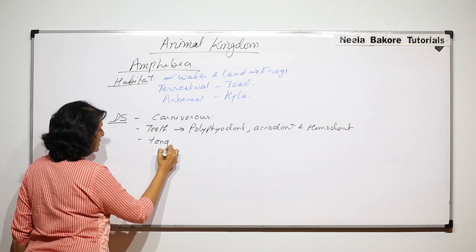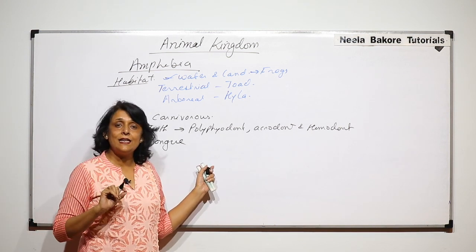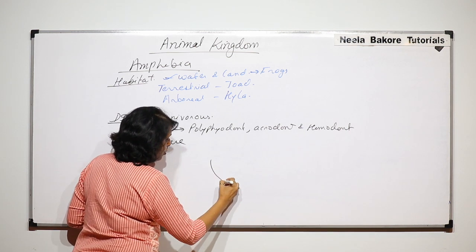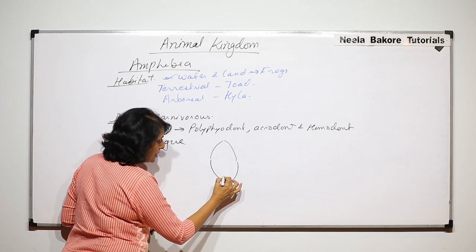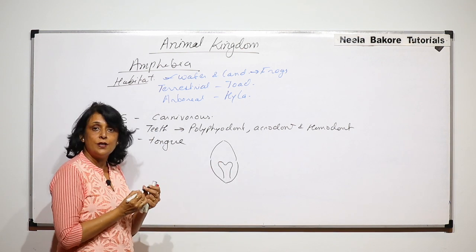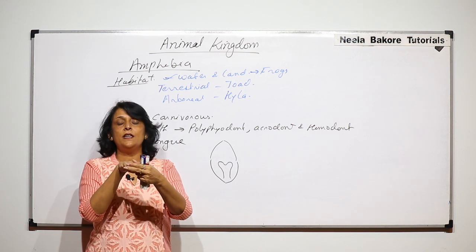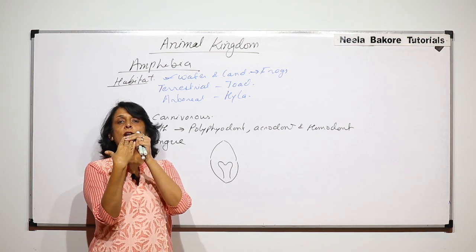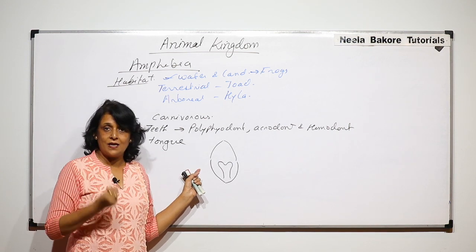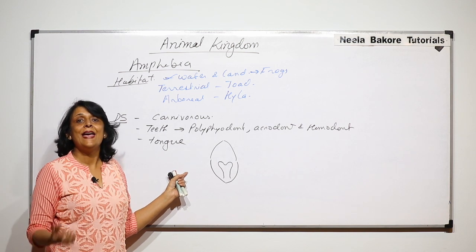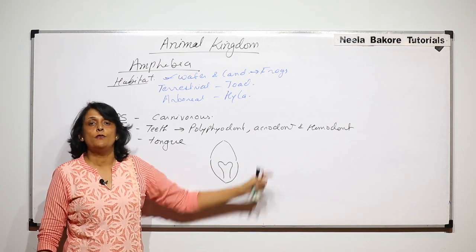In case of frogs and most amphibians, the tongue is anteriorly attached and posteriorly free, and slightly bifid on the posterior side. Unlike humans where the anterior side is free, in frogs the posterior end is free. They dart their sticky tongue outside; insects get stuck to it and are engulfed directly. Their teeth are only for gripping food, not for chewing.